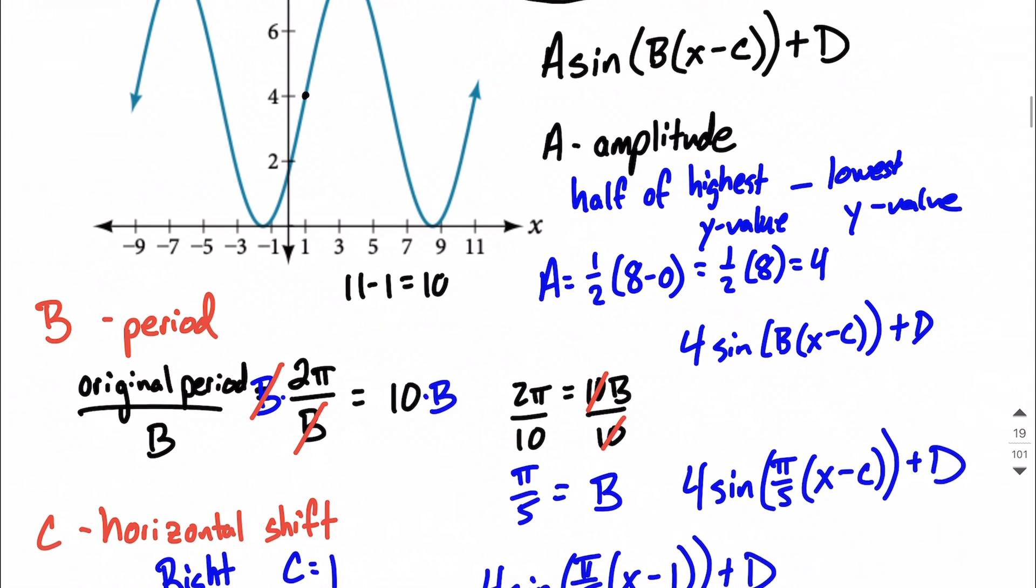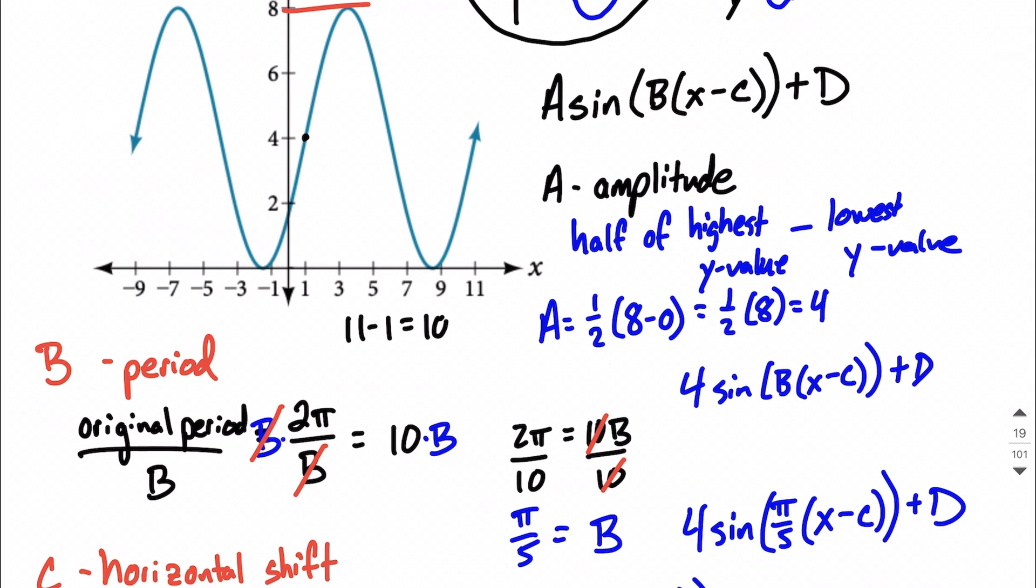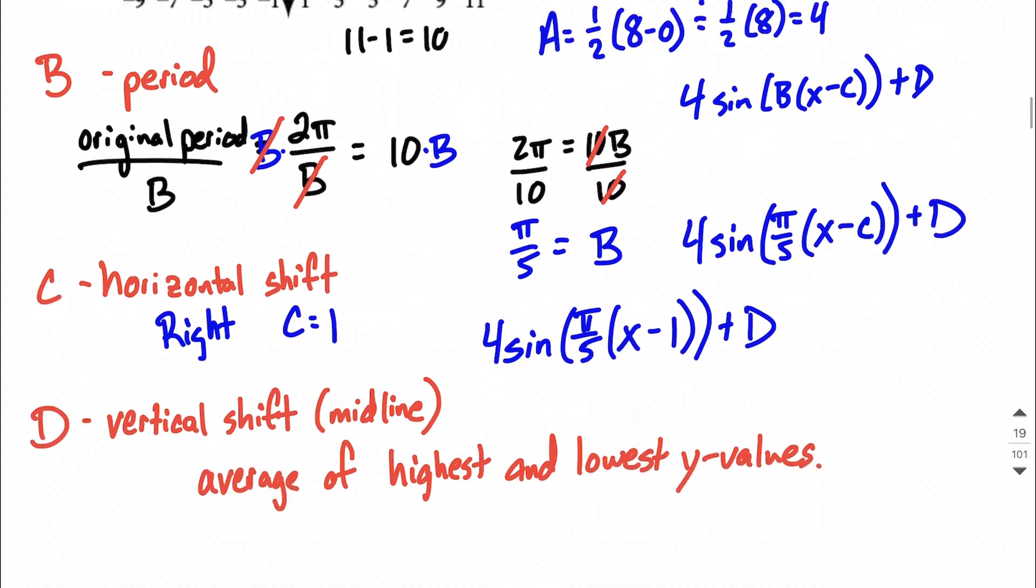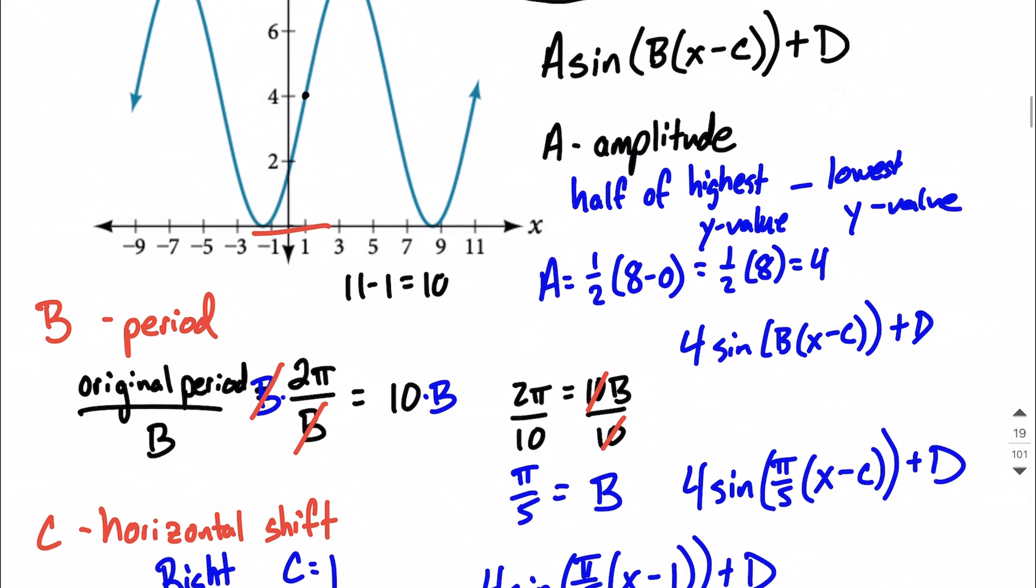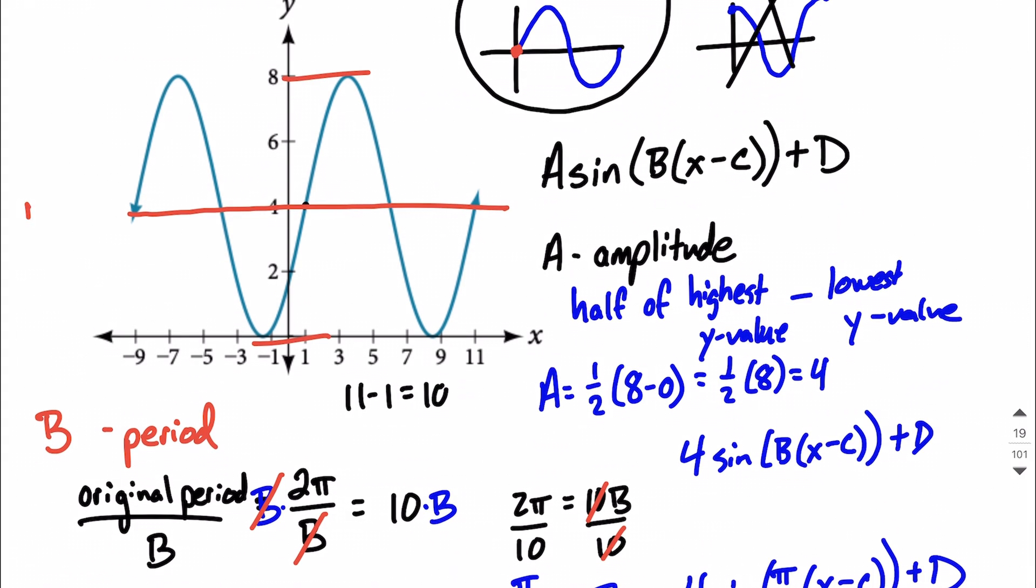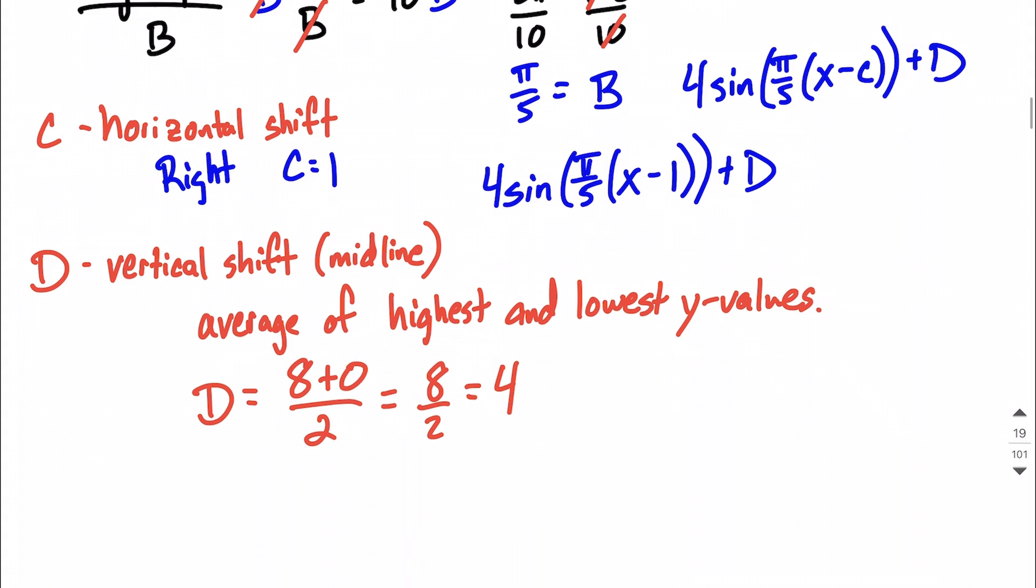So remember, for A, the amplitude, we already calculated the highest y value is 8 and the lowest y value is 0, so we have to take their average to get D. So D is going to be you take 8 plus 0 and divide it by 2 because we had two values there so that's 8 divided by 2 also works out to be 4 and that is where our midline is going to be. Looking up here at the graph, if we were to draw a horizontal line right through there at y equals 4, hopefully that looks like it's cutting the graph directly in half. There's half the graph above that midline and half the graph below that midline so that's our value for D.